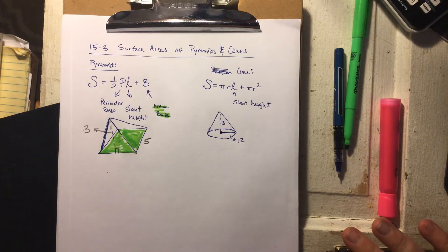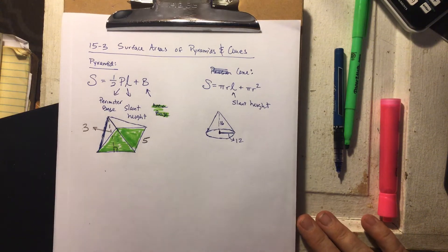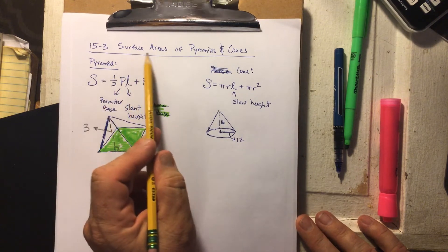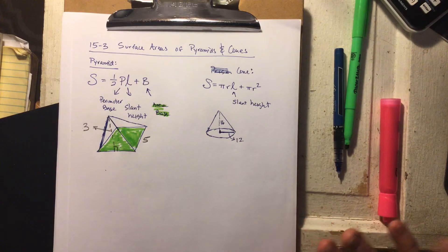Alright guys, video number three, three more to go, but I'm keeping them short so you guys can look at them. So real quick, surface areas of pyramids and cones, all sorts of different shapes, which means there's all sorts of different ways to calculate those.